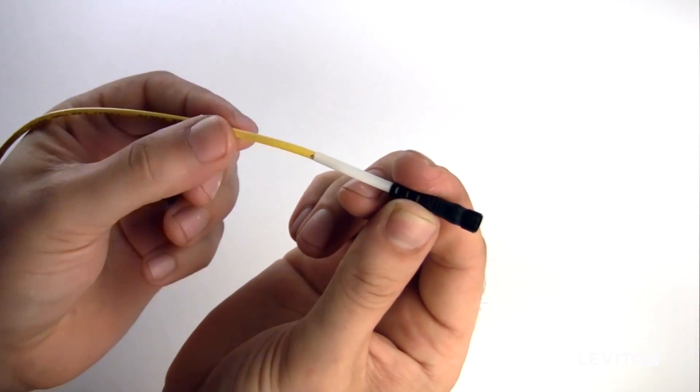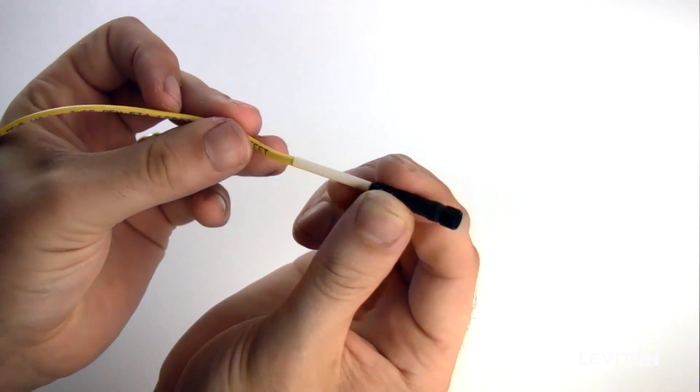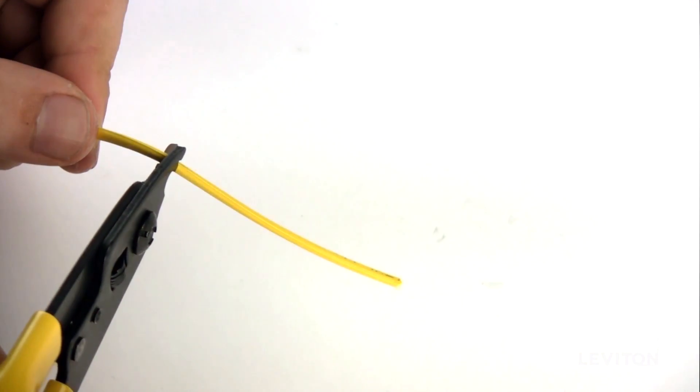The first step is to slide the 2 or 3 millimeter boot onto your cable. Next, remove 70 millimeters of cable jacket.